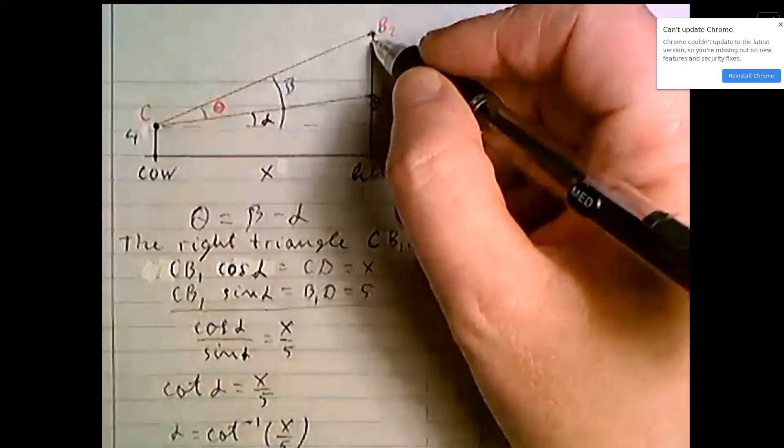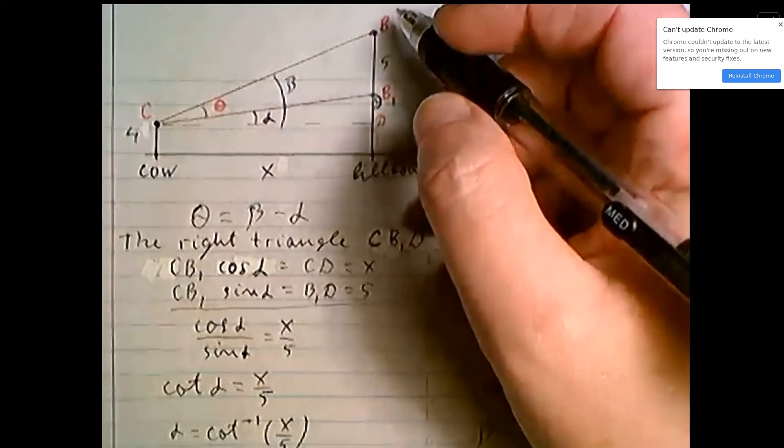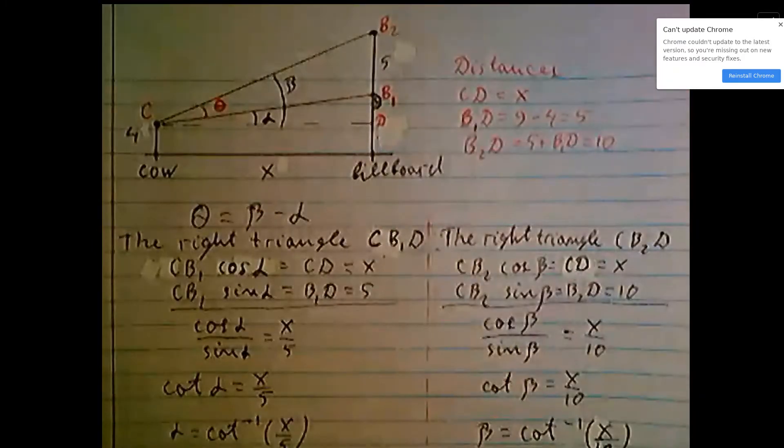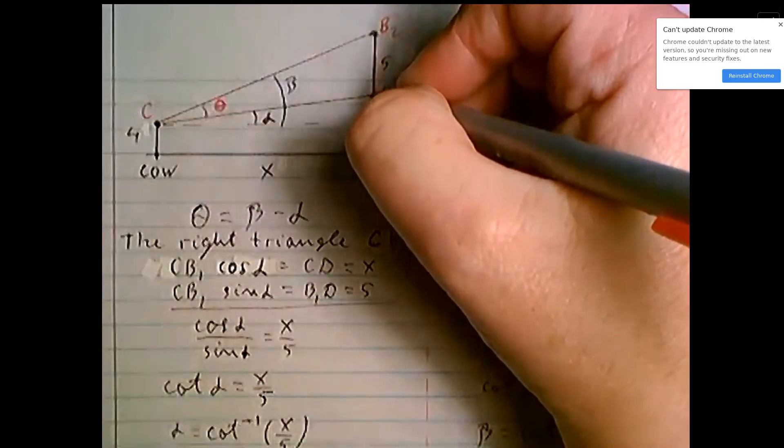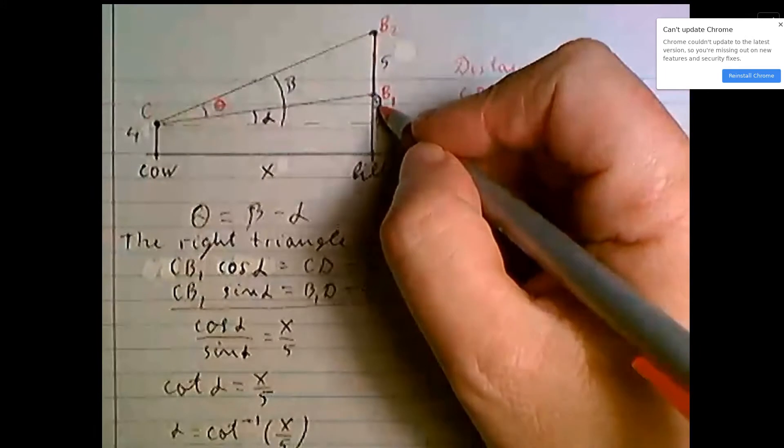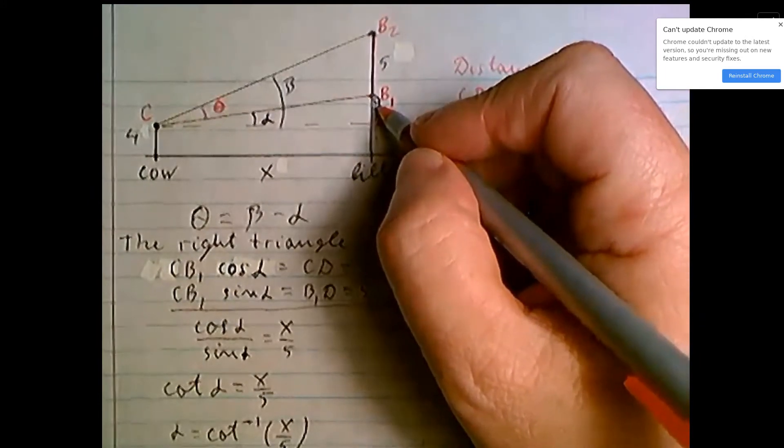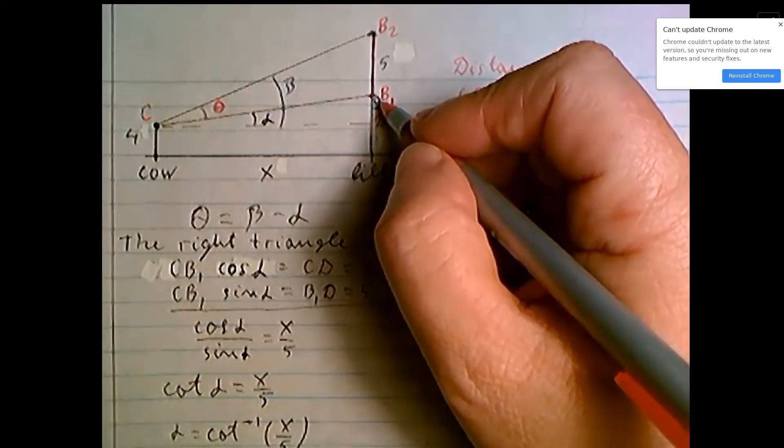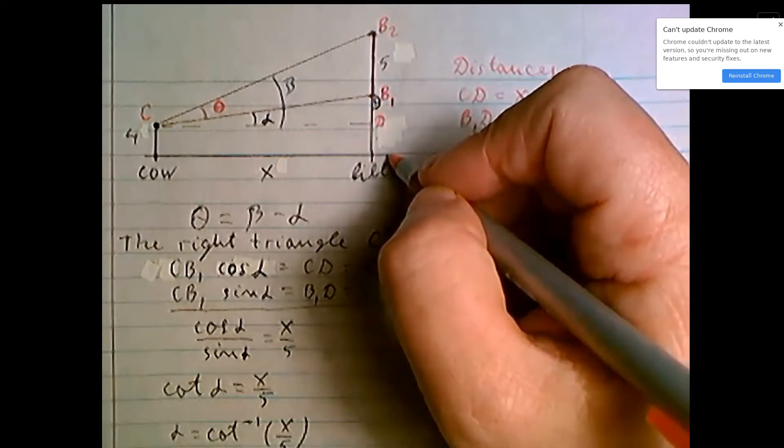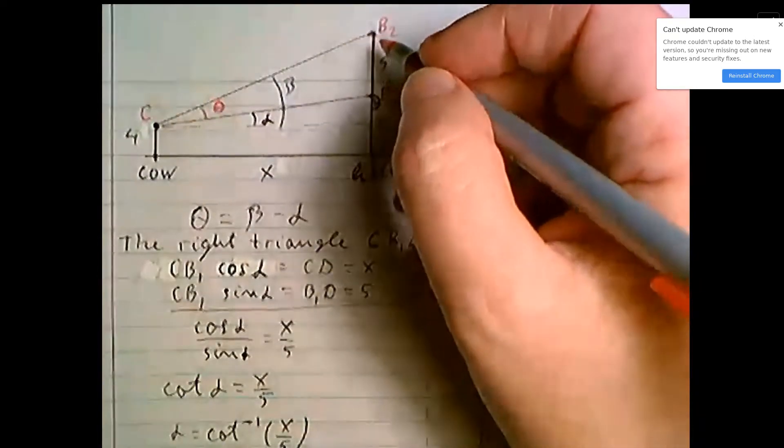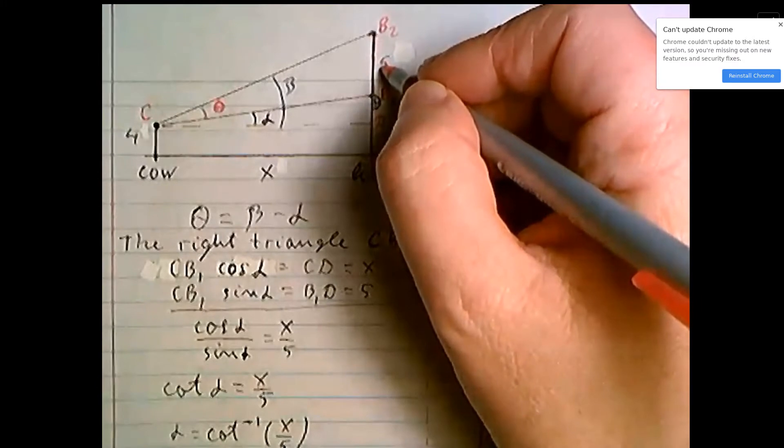This is where we locate our billboard. Here, this billboard. So its bottom is 9 feet above the ground, and height also 5 feet.